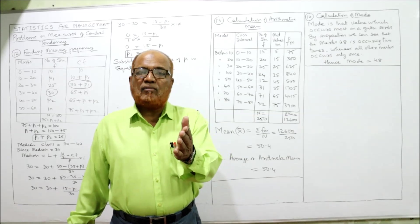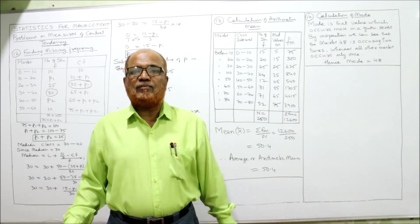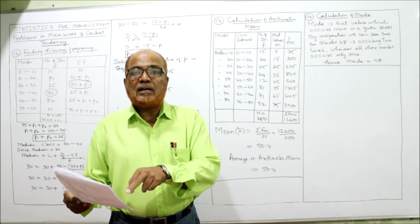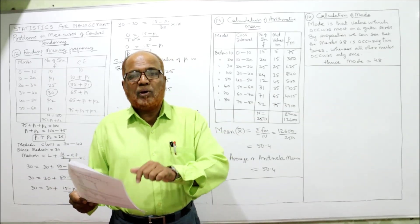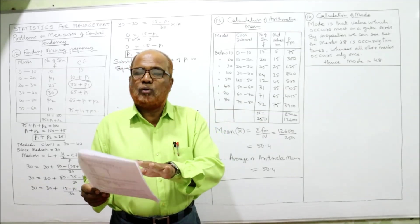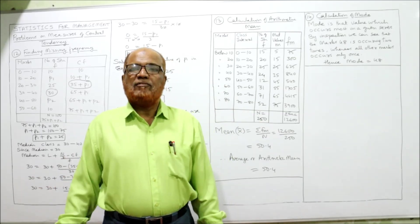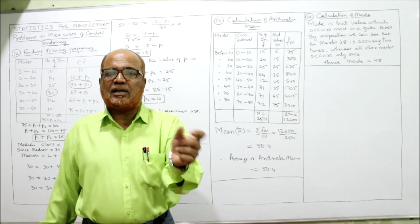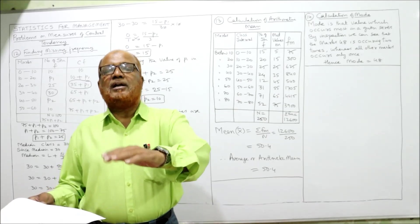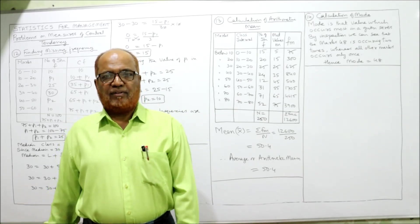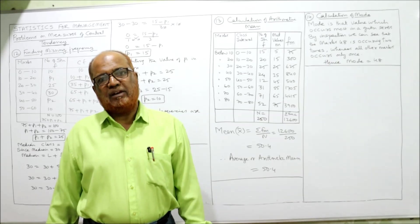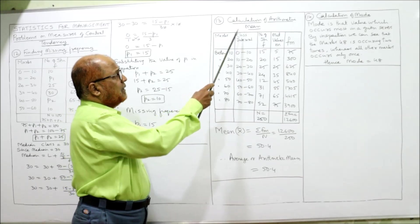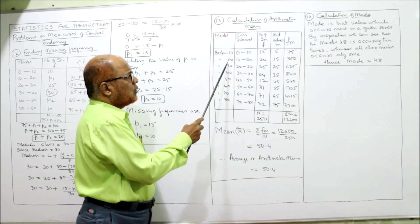The marks are given as: below 10, below 20, below 30, etc. — this is cumulative frequency. We have to convert cumulative frequency into normal frequency. Below 10 means 0–10; below 20 means 0–20, but we require 10–20; below 30 means we require 20–30, and so on.